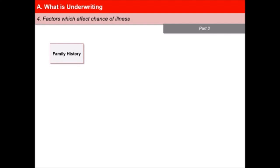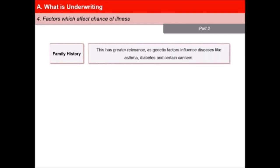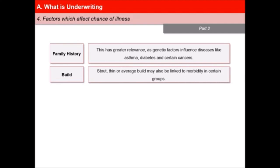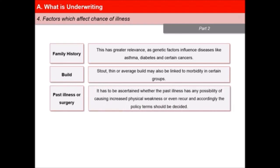5. Family History: This has greater relevance as genetic factors influence diseases like asthma, diabetes and certain cancers. This does impact the morbidity and should be taken into consideration while accepting risk. 6. Build: Stout, thin or average build may also be linked to morbidity in certain groups. 7. Past illness or surgery: It has to be ascertained whether the past illness has any possibility of causing increased physical weakness or even recur, and accordingly the policy terms should be decided.